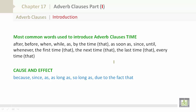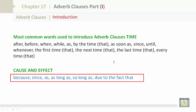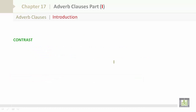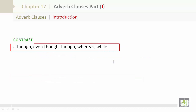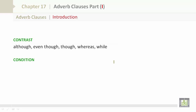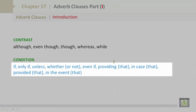For cause and effect, the example words are: because, since, as, as long as, so long as, due to the fact that. Continuing on to contrast, you would use: although, even though, though, whereas, and while. For condition, you would use: if, only if, unless, whether or not, even if, providing that, in case that, provided that, in the event that.